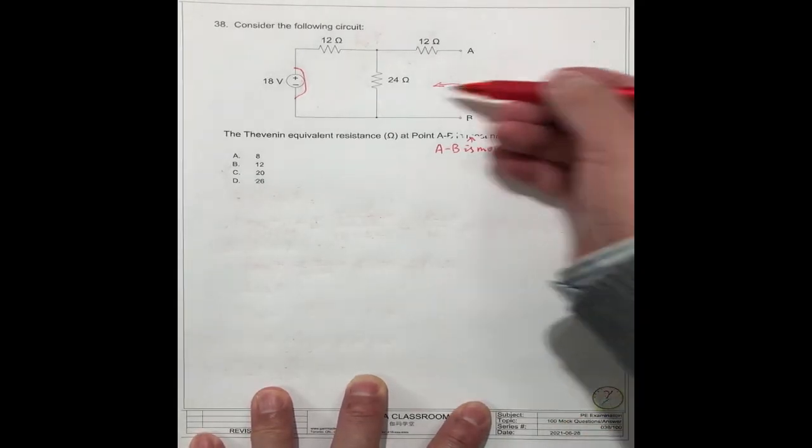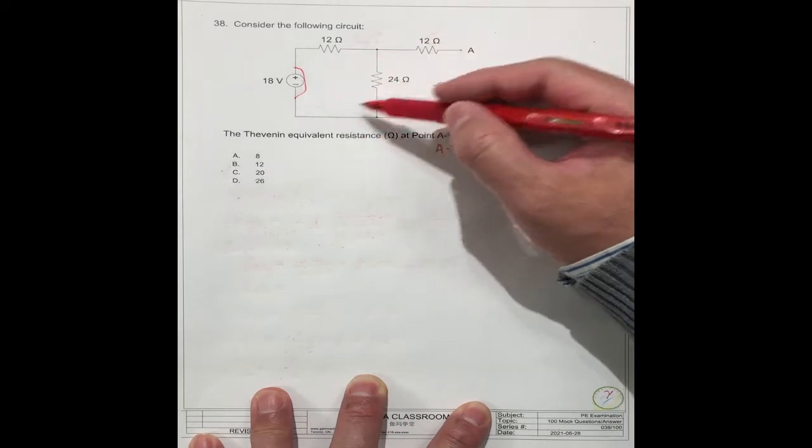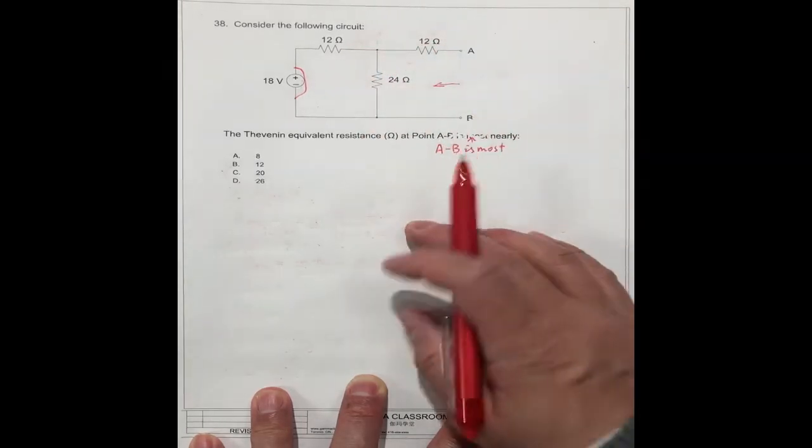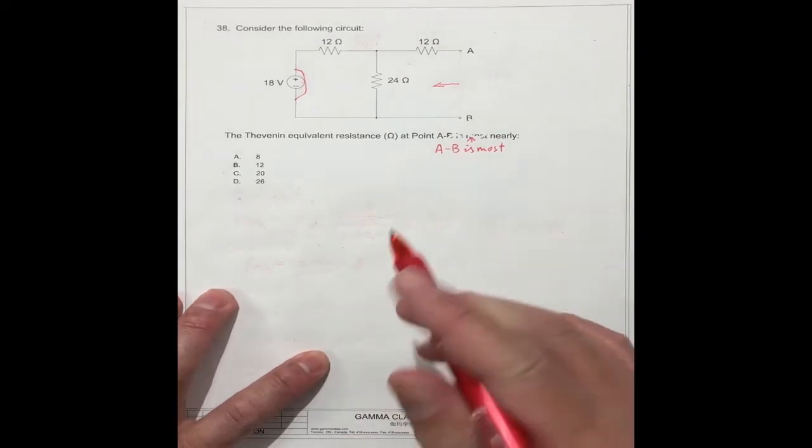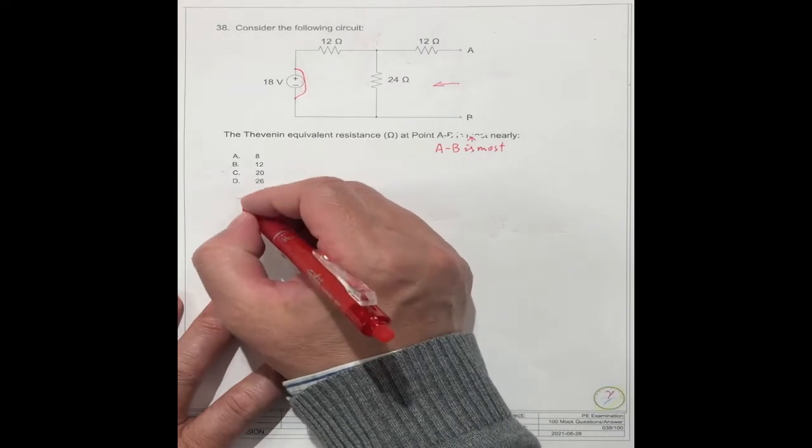When you look at it this way, you know this is the resistor in series connection with these two. These two are in parallel connection. We can get the equivalent resistor just to follow the formula.